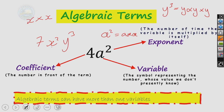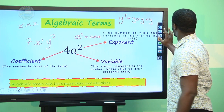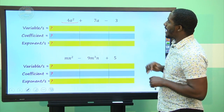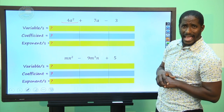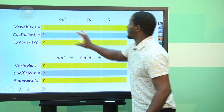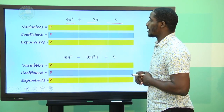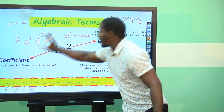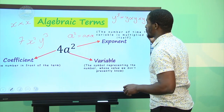Let's look at an algebraic expression: 4a² + 7a − 3. We defined coefficients, variables, and exponents. This expression has three terms. Algebraic terms are made up of coefficients, variables, and exponents. For the term 4a², the variable is a, the coefficient is 4, and the exponent is 2. For the term 7a, the variable is again a and the coefficient is 7.